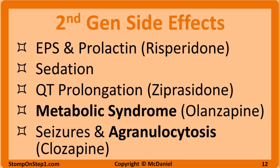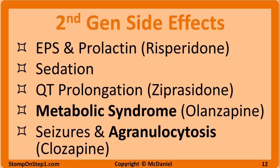Clozapine is the prototype for atypical antipsychotics as it was the first one developed and has higher efficacy. However, it isn't used nearly as much because it causes agranulocytosis and seizures. This drug is usually reserved as a last resort if other options don't work. Patients on clozapine need a CBC very frequently to monitor for agranulocytosis. If a low white blood cell count is found, the medication must be discontinued to prevent life-threatening infections.